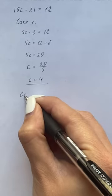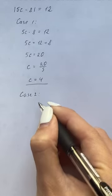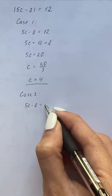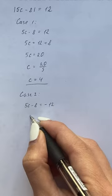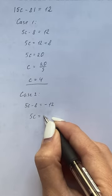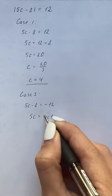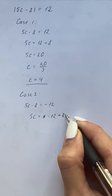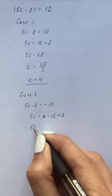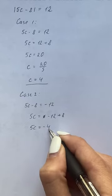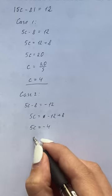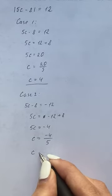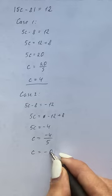In the second case, we have that our expression 5c minus 8 equals negative 12. So we have 5c equals negative 12 plus 8. Therefore 5c equals negative 4, and therefore c equals negative 4 divided by 5, so c is negative 0.8.